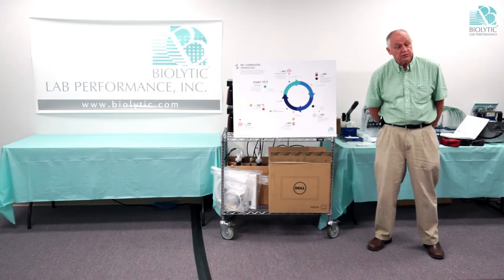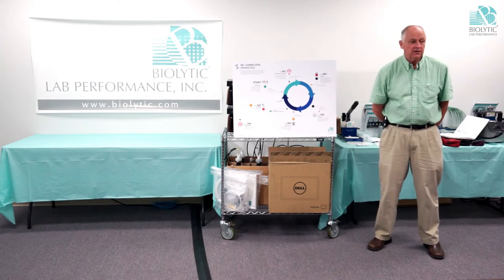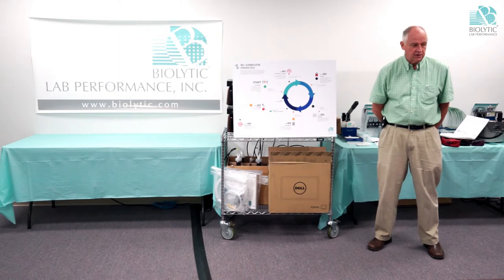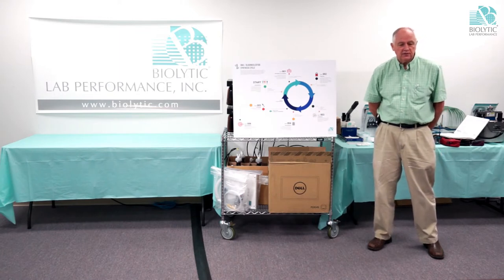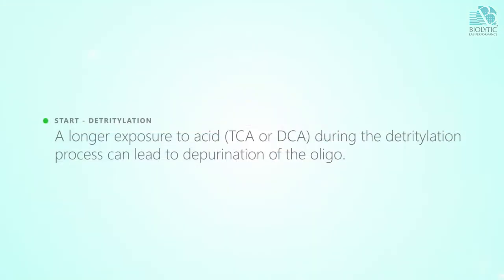The more exposure your oligo has to acid, the more likely you'll have depurination of A and G. A is the one that depurinates most easily, and that causes a problem — it causes mutations and breaking in your chain. So you want to eliminate that.